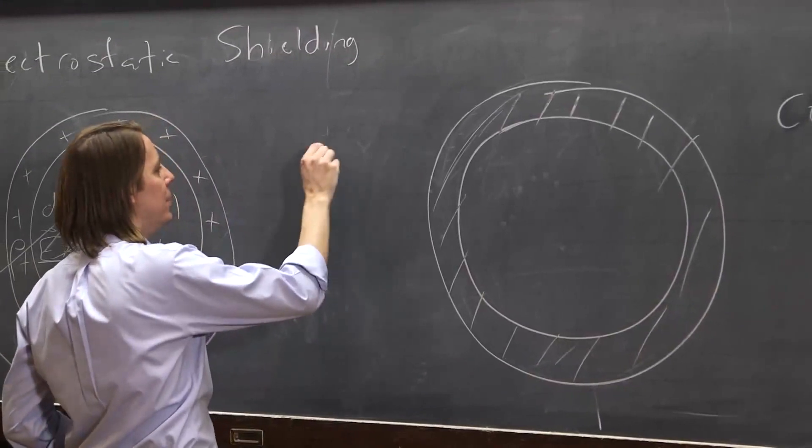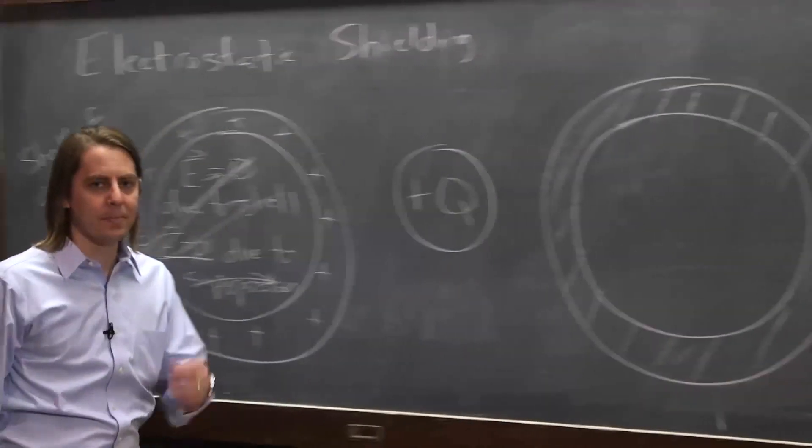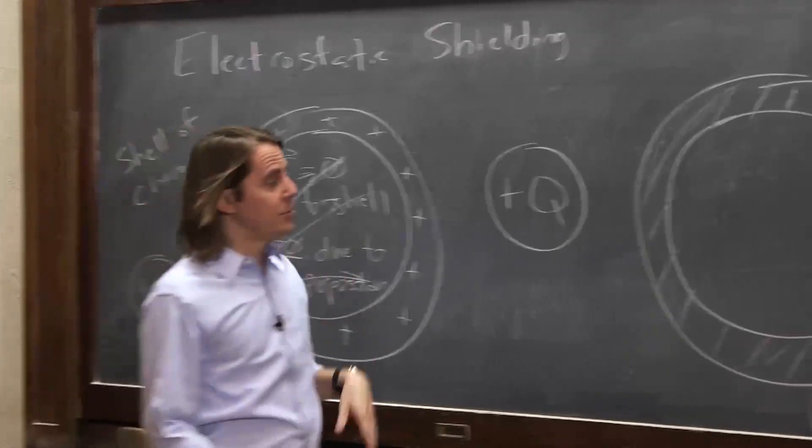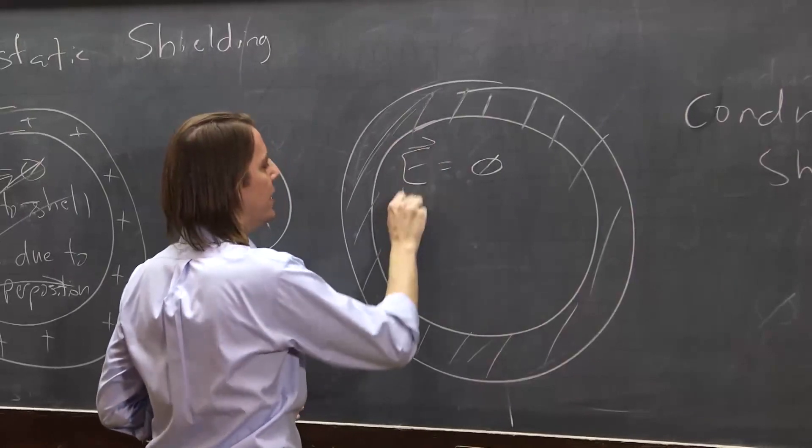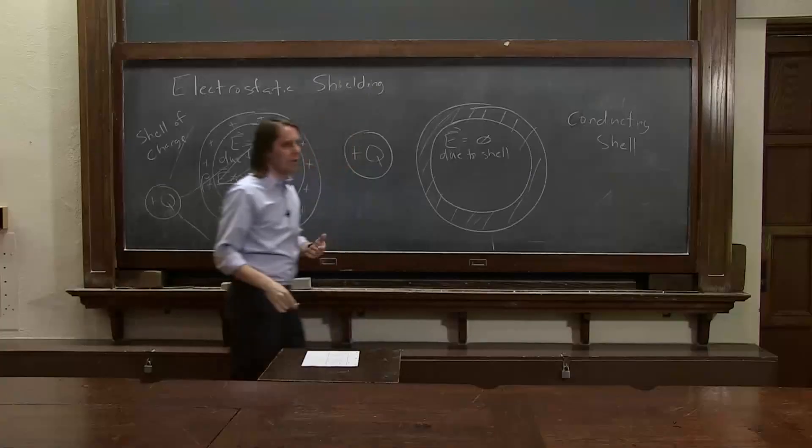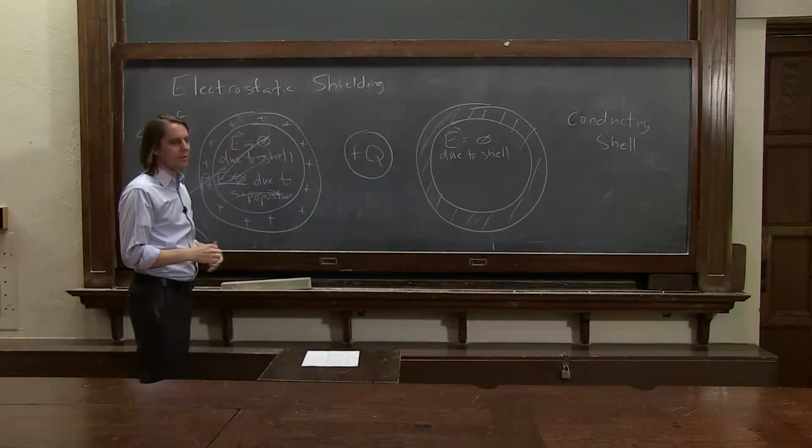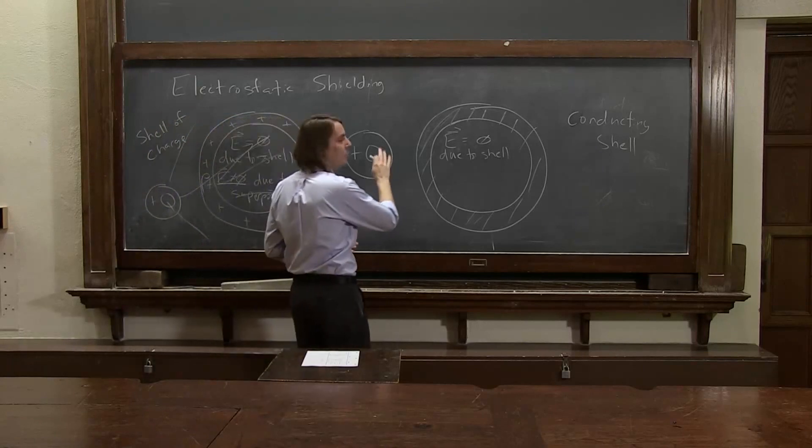Let's think about how a metal or a conducting shell might be different. When the conducting shell is neutral, or even if it's charged, E equals zero. Again, due to the shell, a shell itself makes no charge. Makes no field. The question is, does it shield from an external charge? And now, this will. And the reason is it's different.